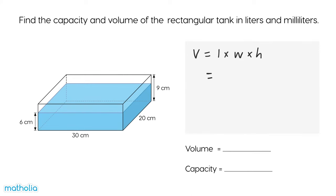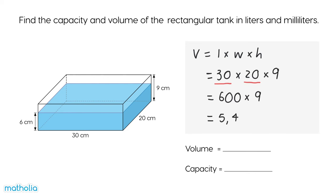This rectangular container has a length of 30 centimetres, a width of 20 centimetres and a height of 9 centimetres. The capacity of the container is 5400 cubic centimetres, which is 5 litres, 400 millilitres.